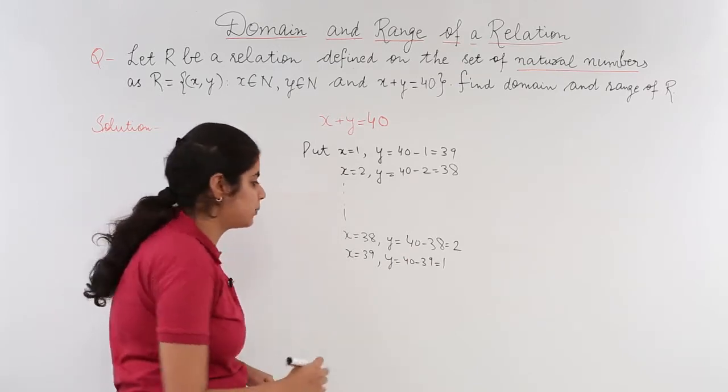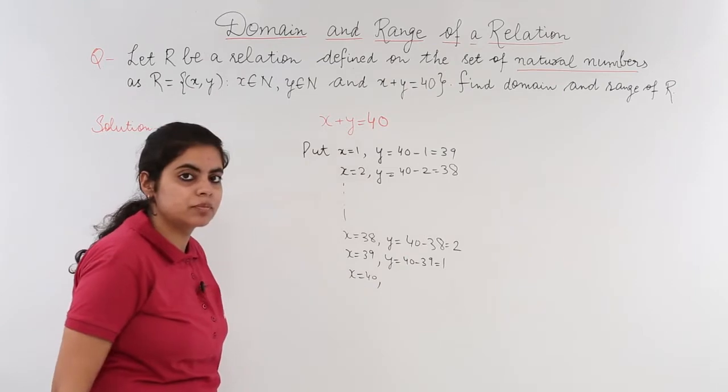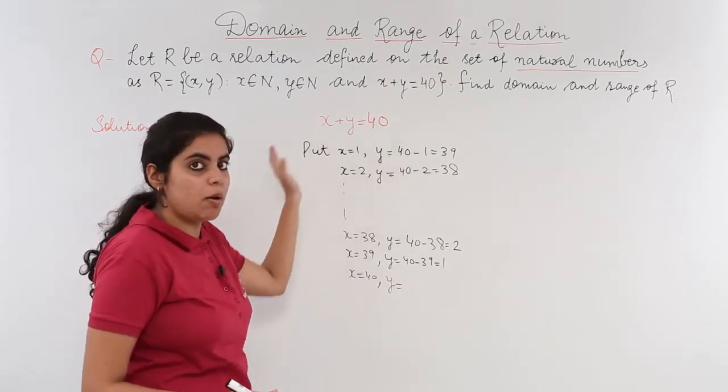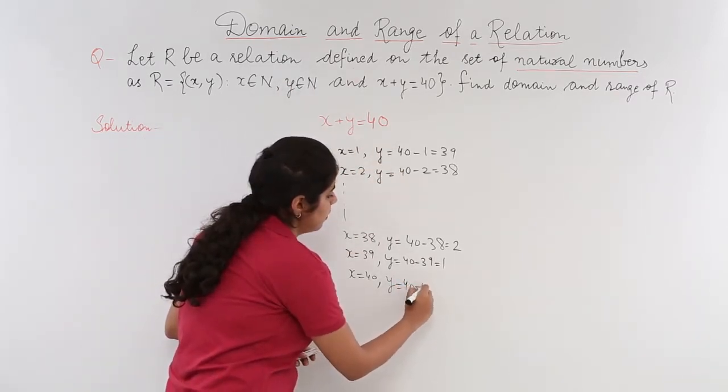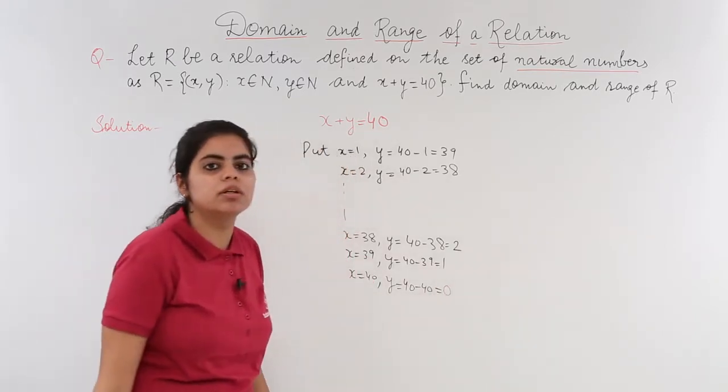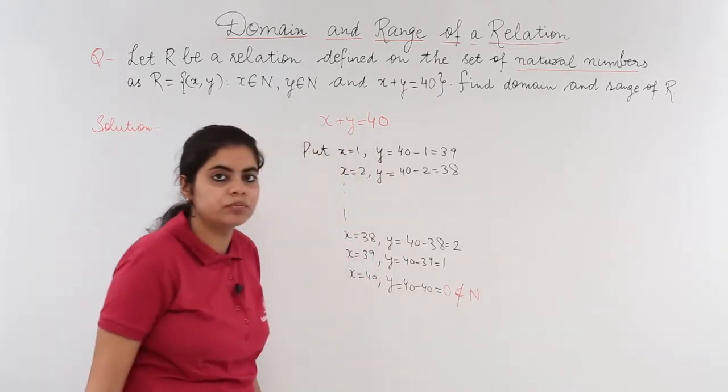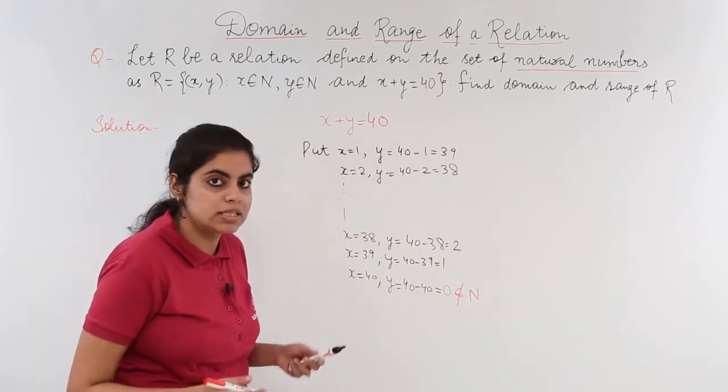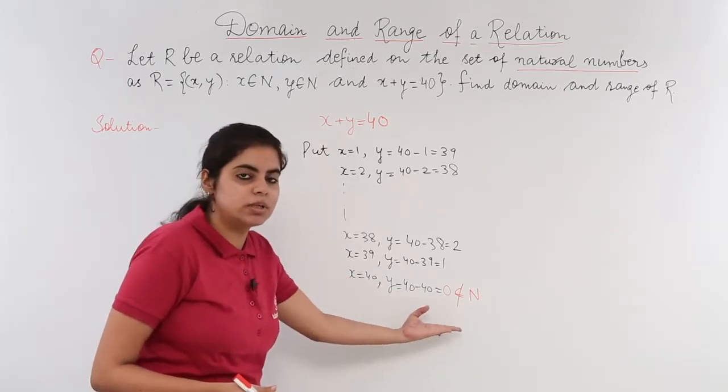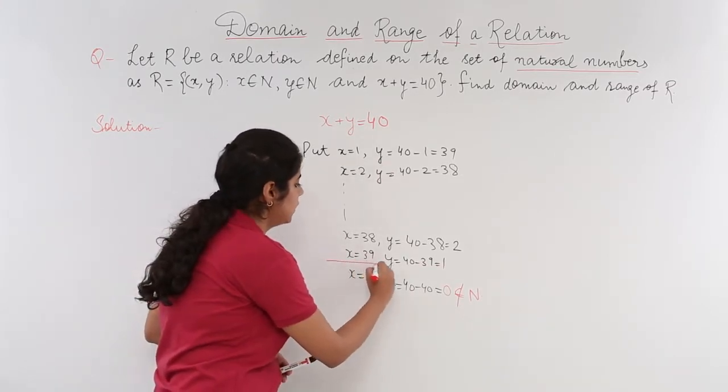Let's move on further and see what happens. If I put x=40, then what is y? y is nothing but 40-x, that means 40-40 which is 0. And is 0 a natural number? No, because 0 does not belong to N. So I can say that I cannot put this condition. This statement should not be in the solution. I have to carry on till here.